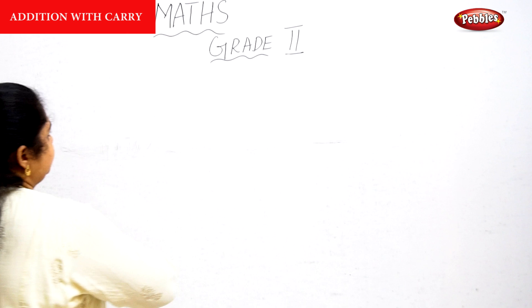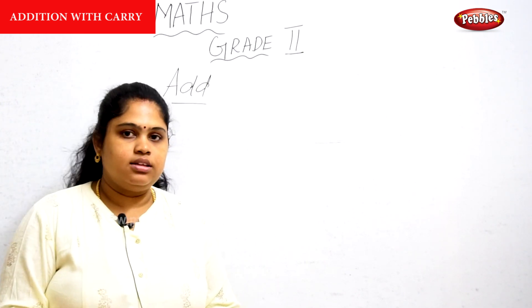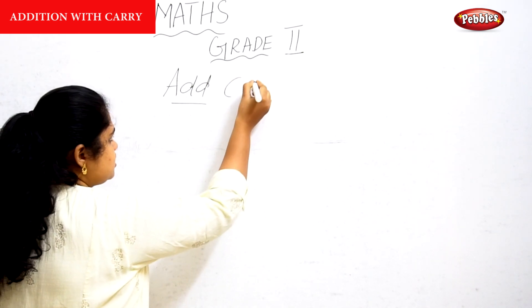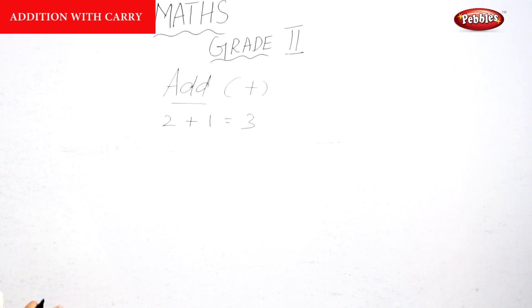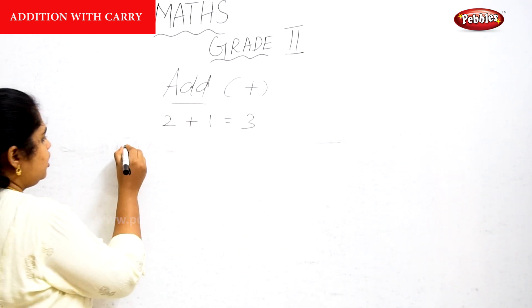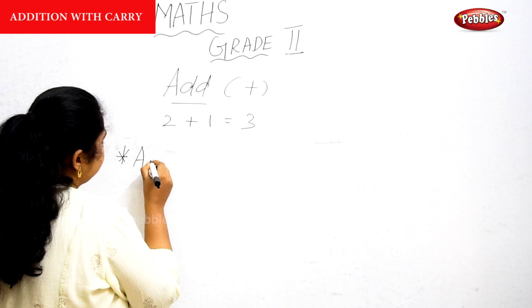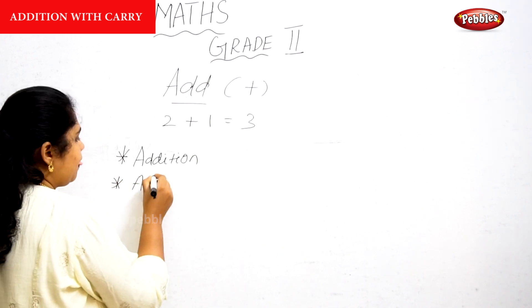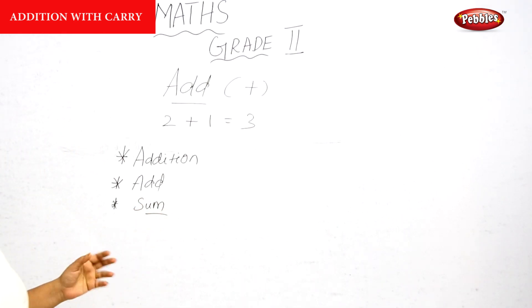So, addition. We have different kinds of names that indicate it is an addition. For example, what is the symbol for addition? It's a plus. When we are adding one number to another number, this is called an addition. And instead of addition, we can also say 'add.' Or when your question comes as a 'sum,' that is also asking you to find the addition.